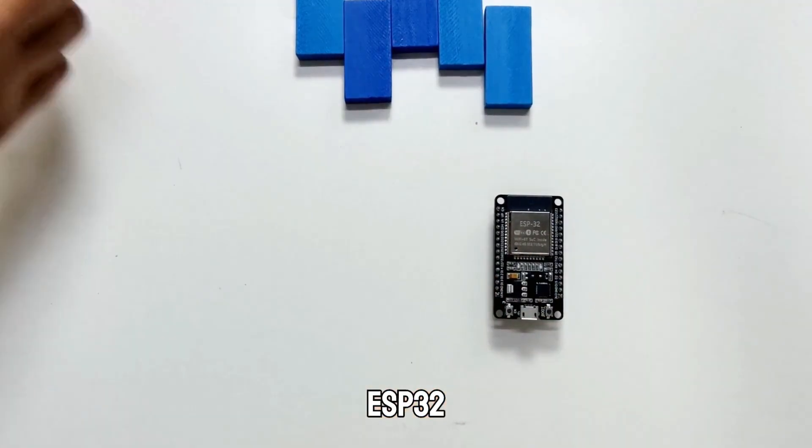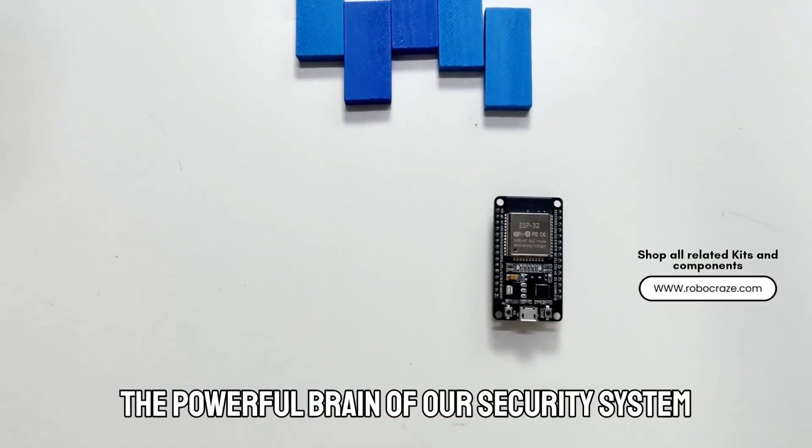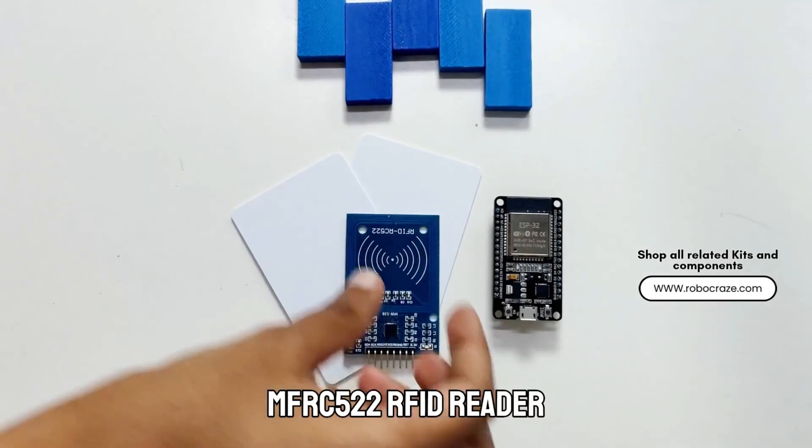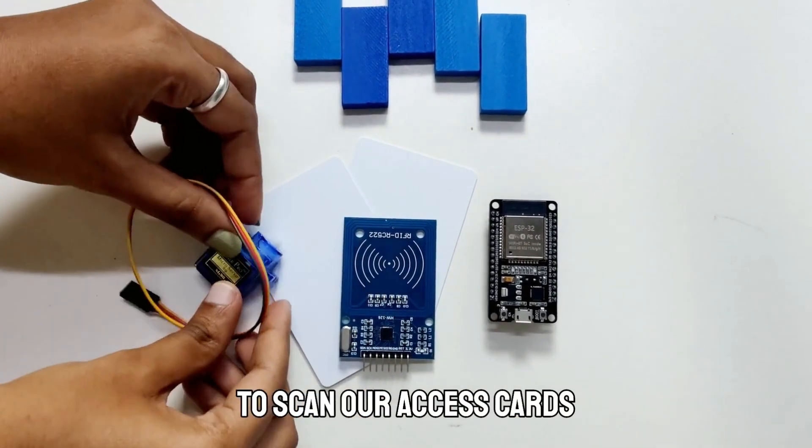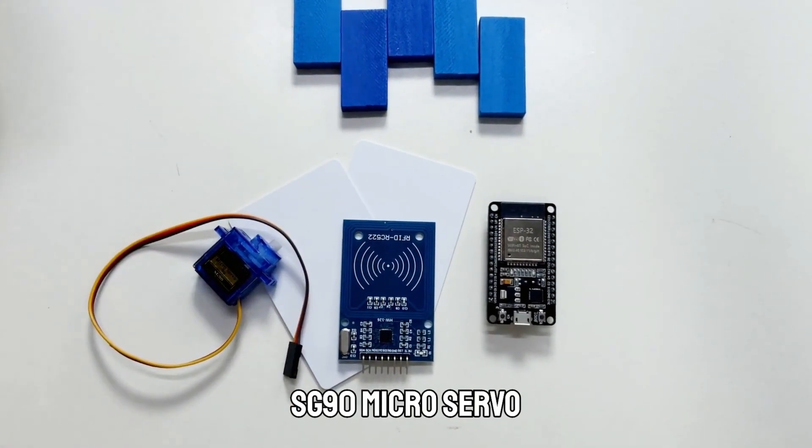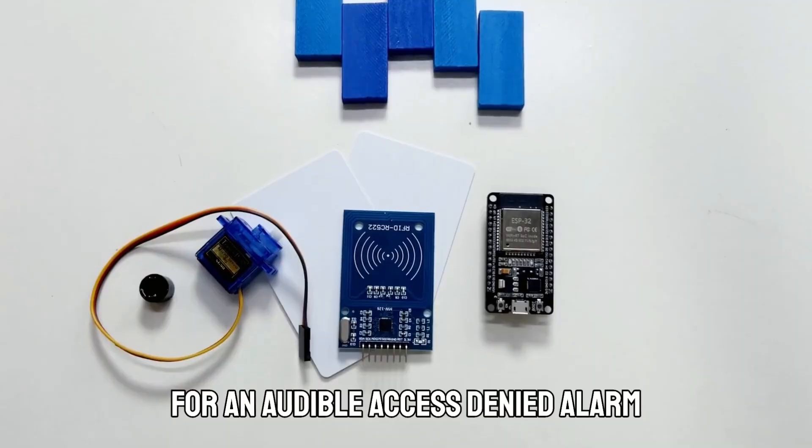For this project, we will be using an ESP32, the powerful brain of our security system, an MFR-C522 RFID reader to scan our access cards, an SG90 microservo and a small buzzer for an audible access denied alarm.